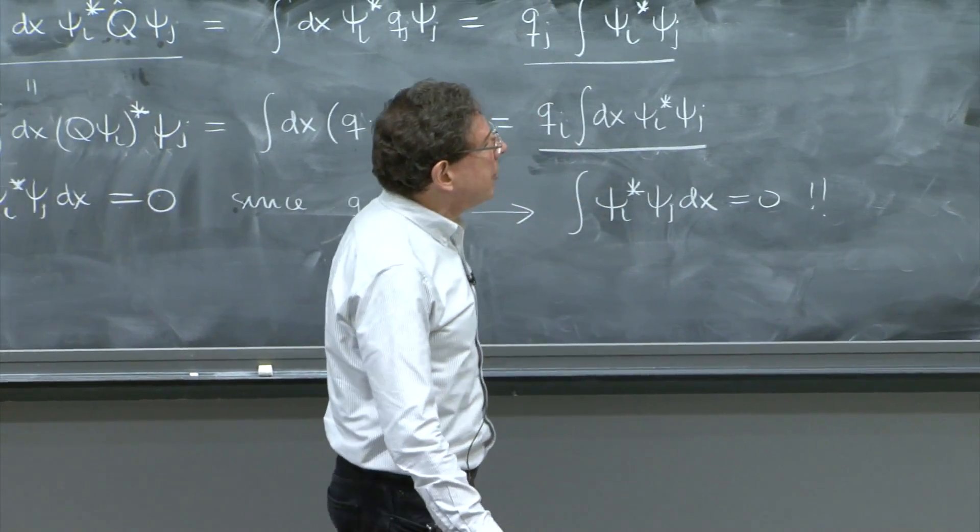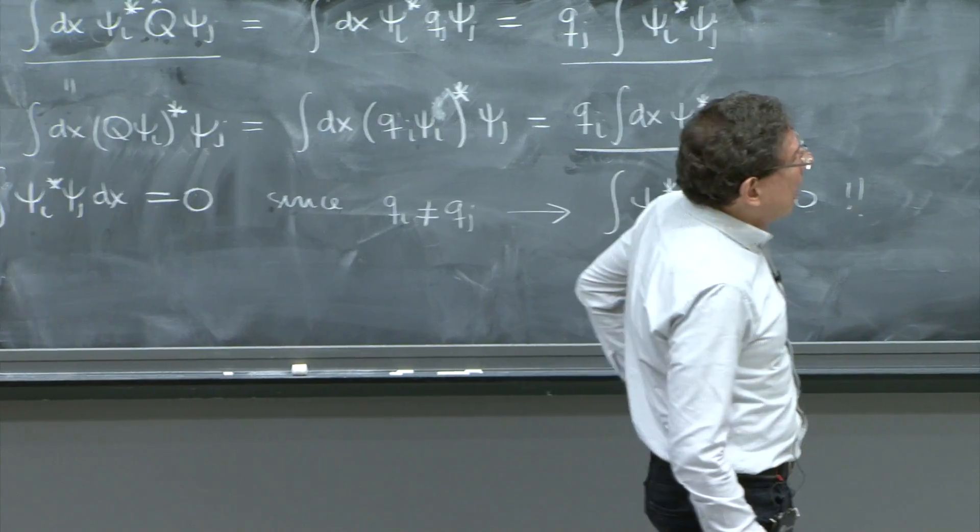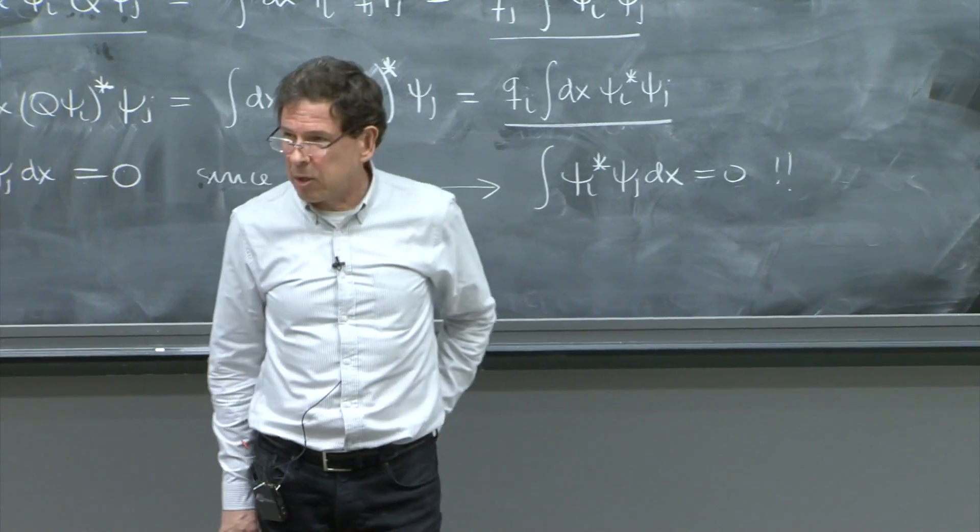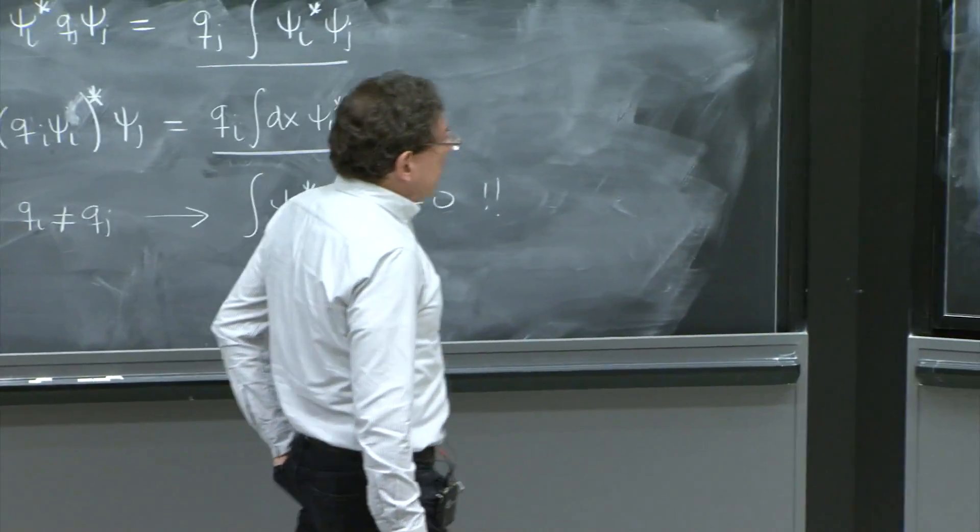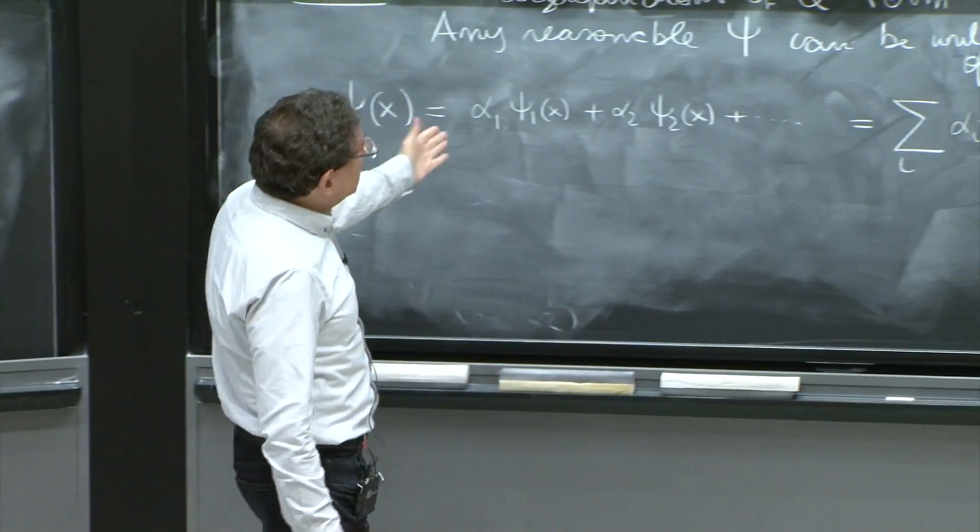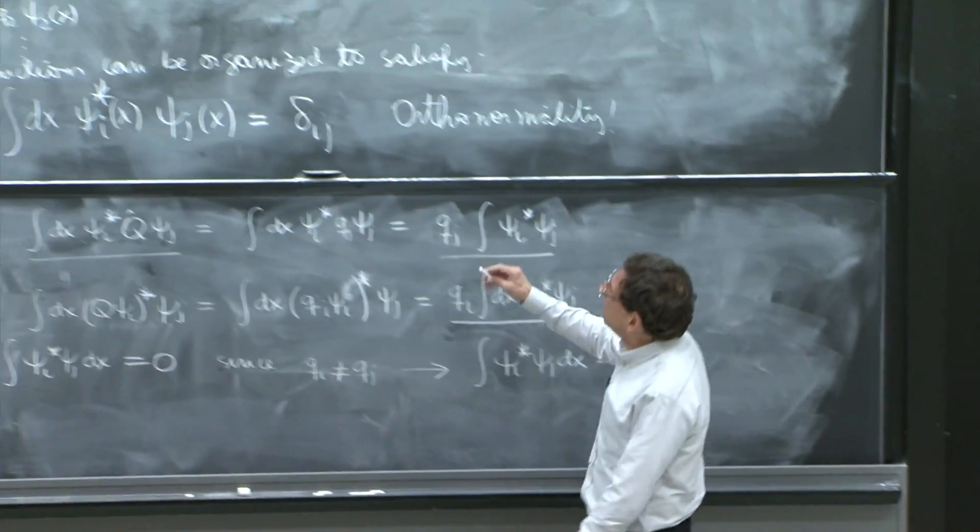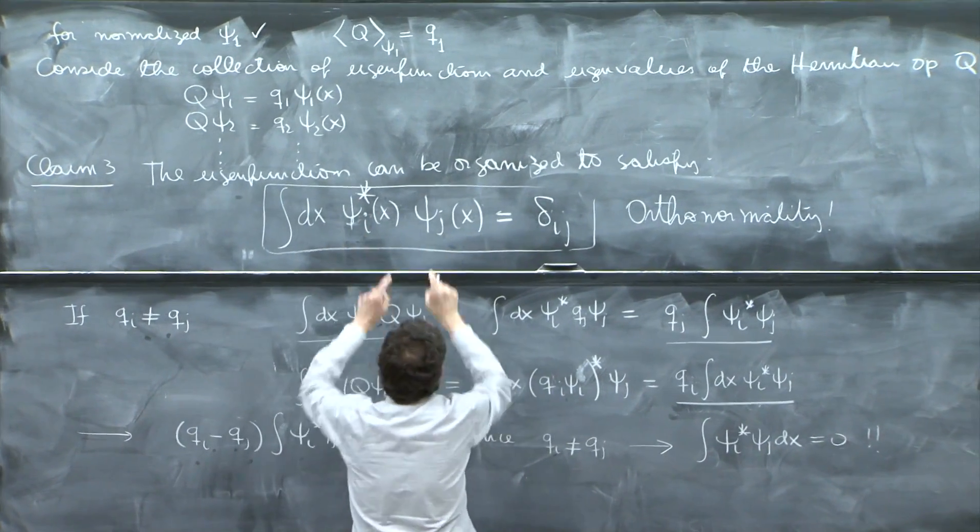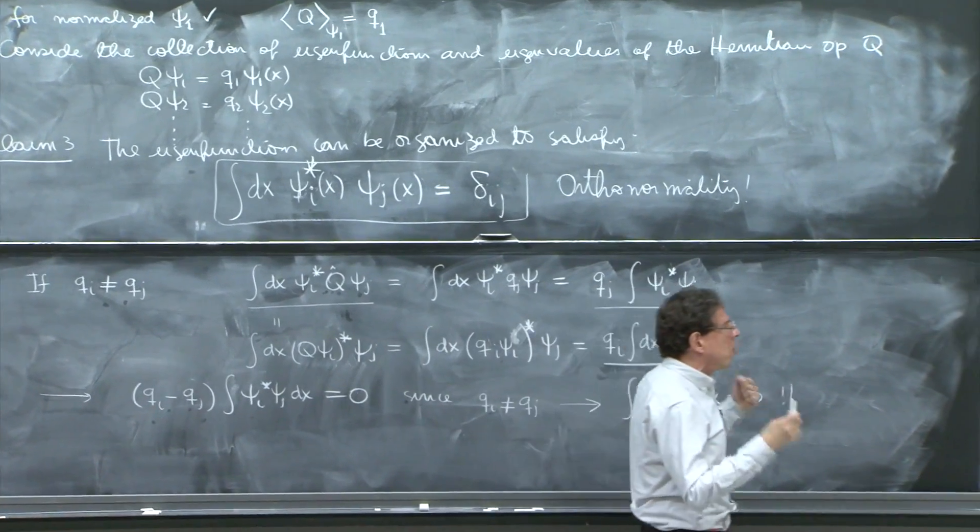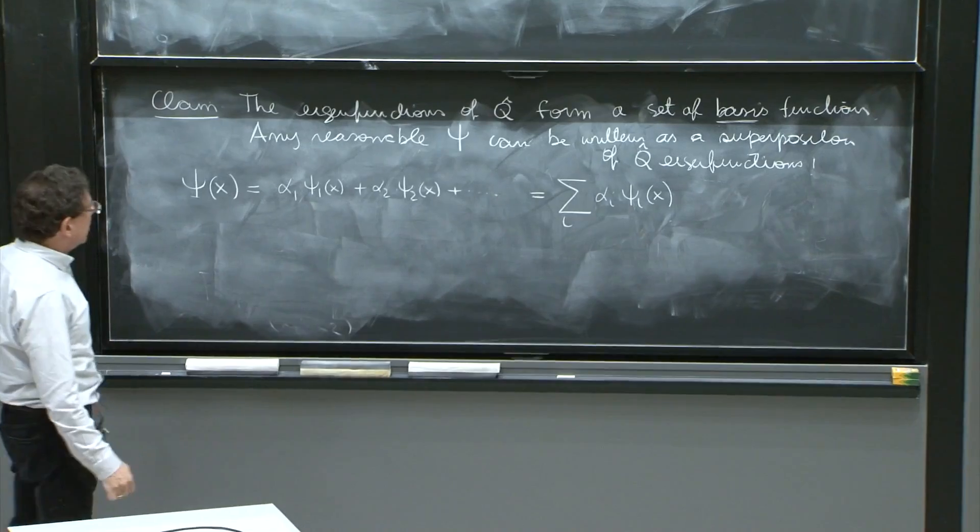And there are two things to say here. One is how would you calculate those alpha i's? Well, actually, if you assume this equation, the calculation of alpha i's is simple because of this property. You're supposed to know the eigenfunctions. You must have done the work to calculate the eigenfunctions. So here is what you can do.